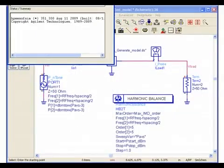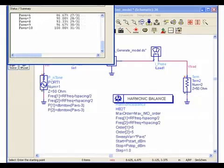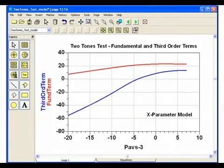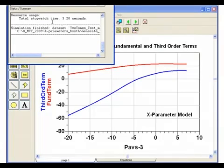Using the same exact template, I now insert my X-parameter model and simulate. And here are the results. Notice that for this simple two-stage power amplifier, the model simulated in three seconds, which is about four times faster than simulating the circuit level PA.